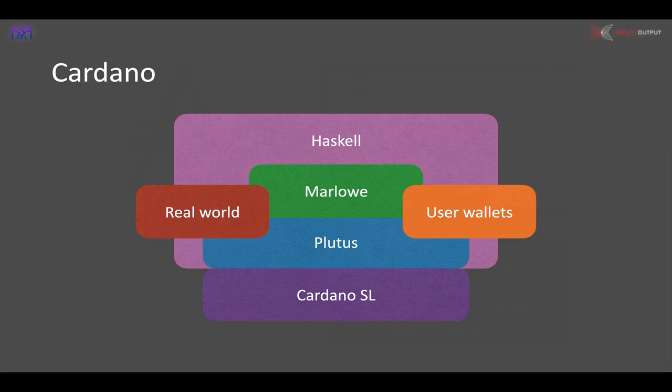Building on top of Plutus, Marlowe is actually a complex Plutus smart contract — we've built a special purpose domain specific language. As you can see from the diagram, this is embedded in Haskell, so Haskell pervades the programming aspects of the Cardano blockchain, with general purpose facilities provided by Plutus and special purpose facilities by Marlowe.